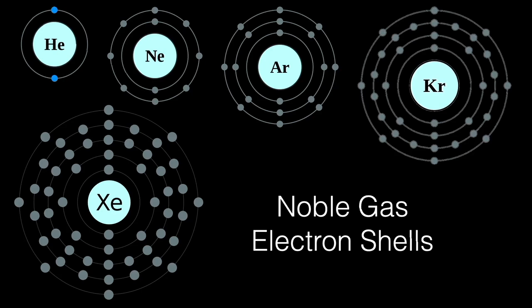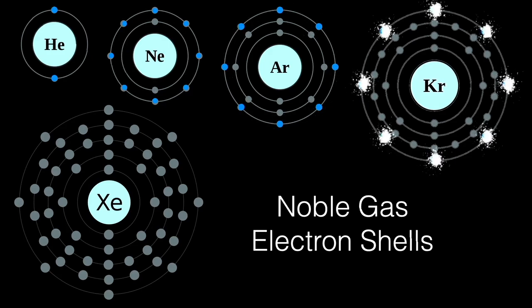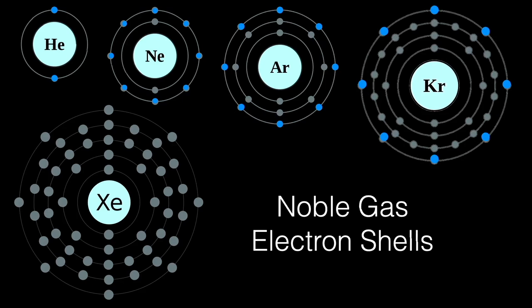The next shell is complete with eight electrons, and this is the element neon. Next is argon, then krypton with its eight electrons in the outer shell. Finally, we have xenon with its outer eight electrons.